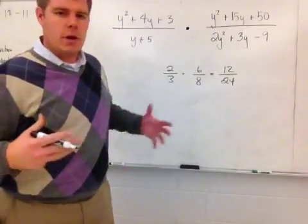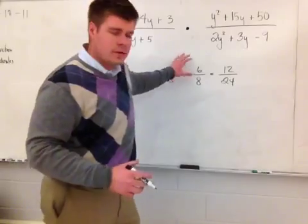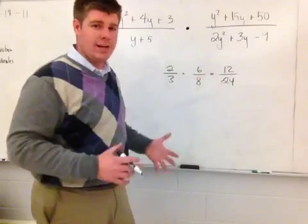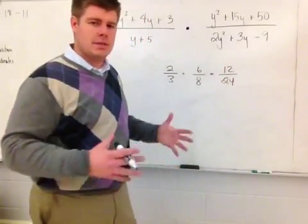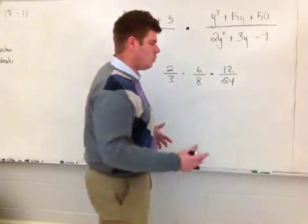Now I have to go through another process. If I go through this process here and I just do the tops times the bottoms, I now have to go through a process of, I've got these larger numbers in which I now need to reduce because I can never leave a fraction unless it's in simplest form. So now I've got 12 over 24, which is one half.